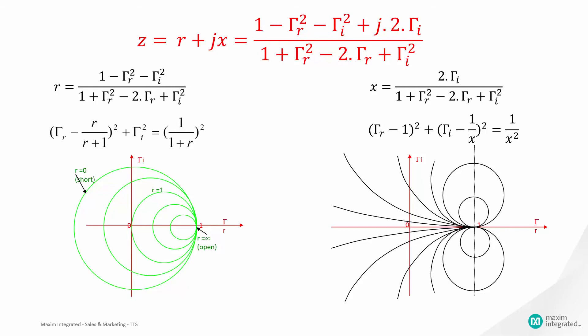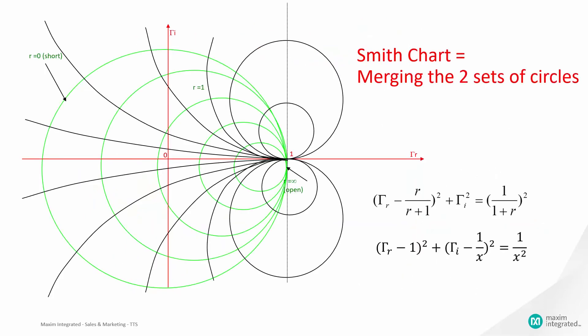The Smith chart simplifies the merging of the two sets of circles. For a given normalized load impedance where Z equals r plus jx, it will be represented by the point which is the intercept between the real circle corresponding to r and the imaginary circle corresponding to x.